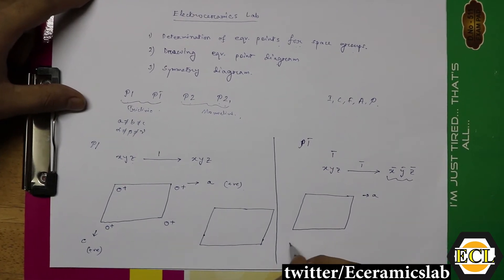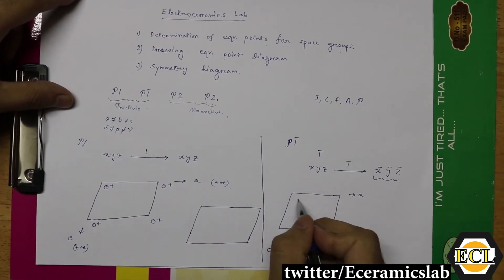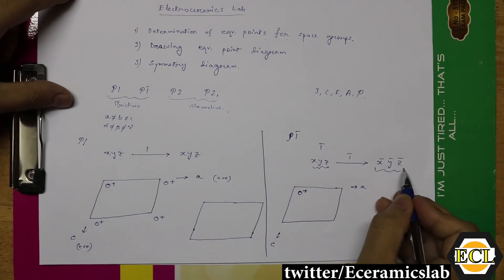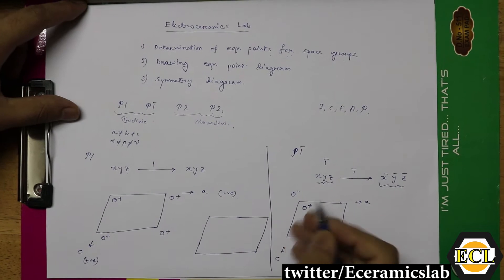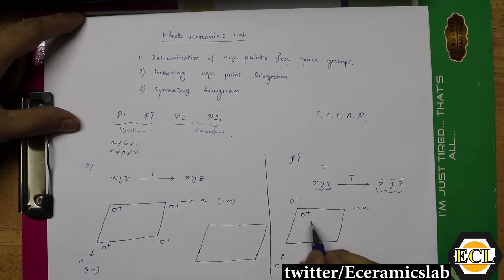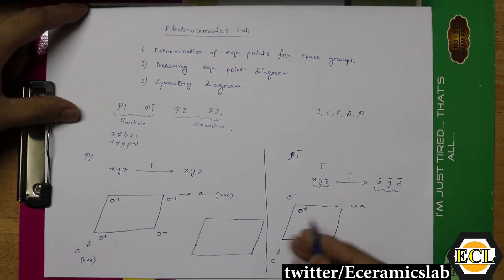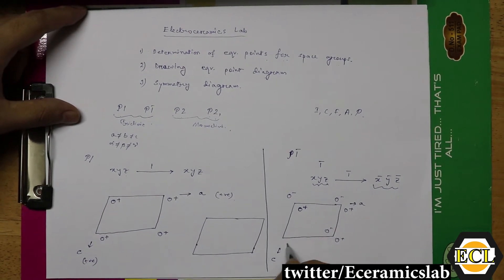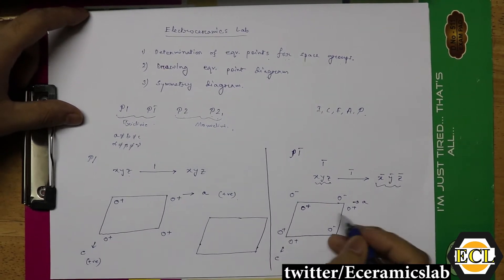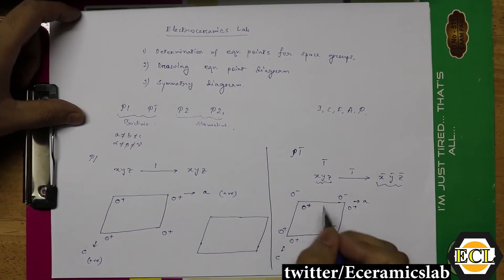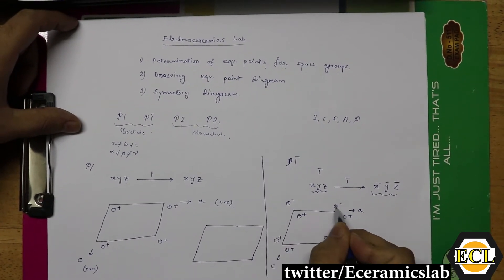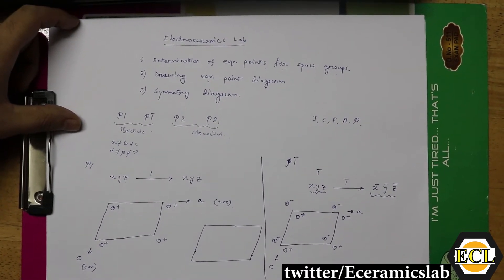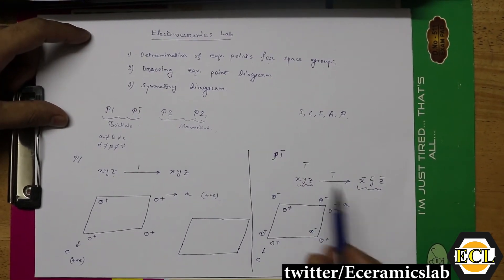The symmetry diagram for P1-bar: considering A axis and C axis, the point XYZ is marked with a plus sign indicating it is above the plane, and the X̄ Ȳ Z̄ point is marked with a minus sign indicating it is below the plane. In the equivalent point diagram, since there is an inversion center, we put a comma on this point according to the crystallographic convention.